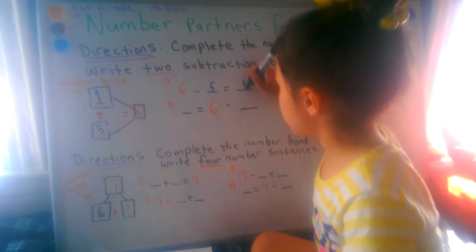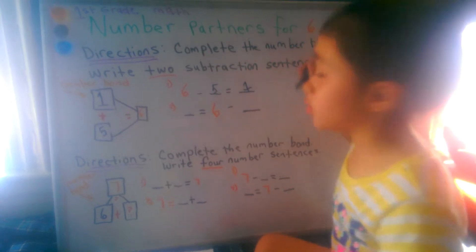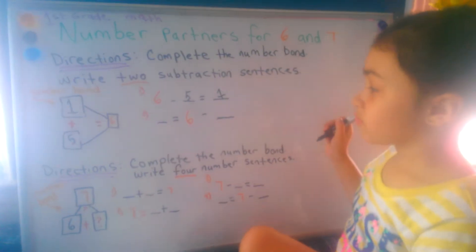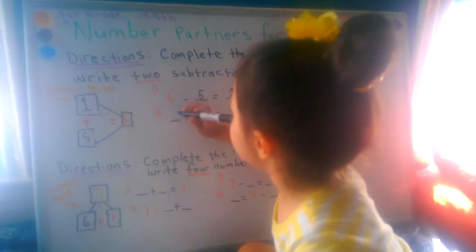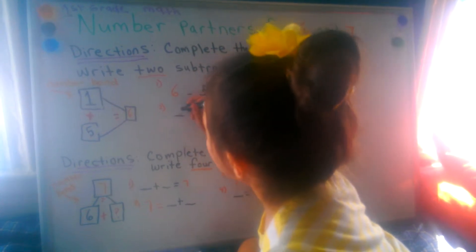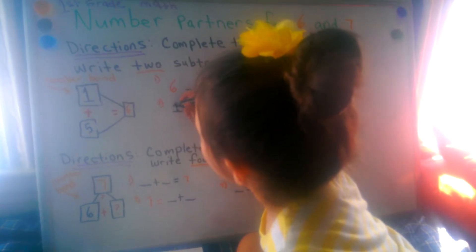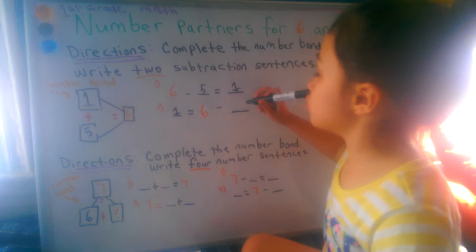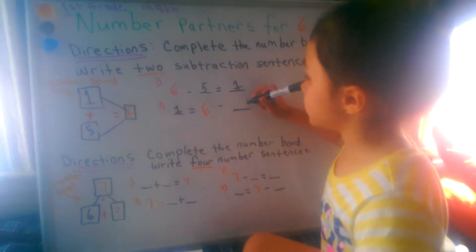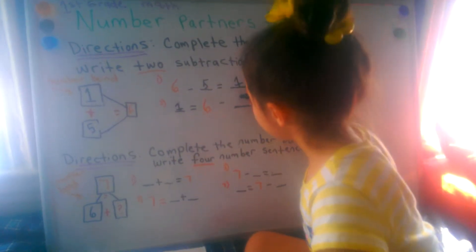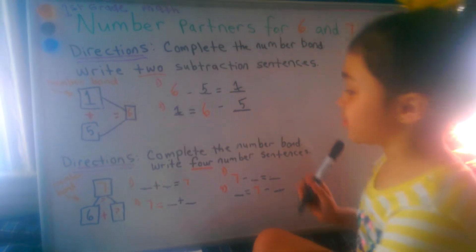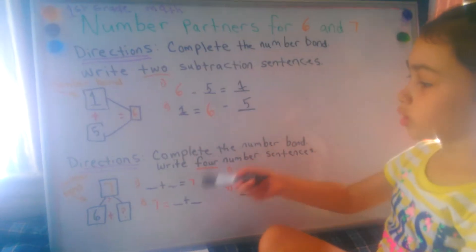How am I doing? Good. Number two. One equals six take away five. Then we come down here.